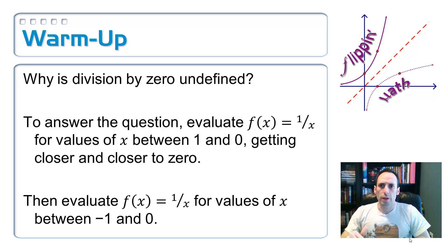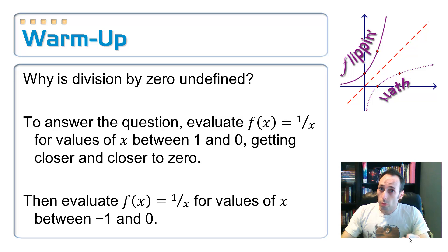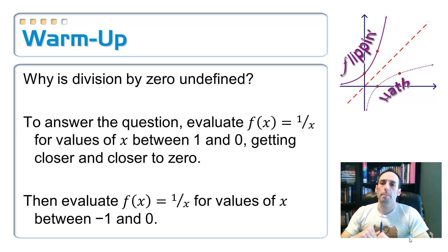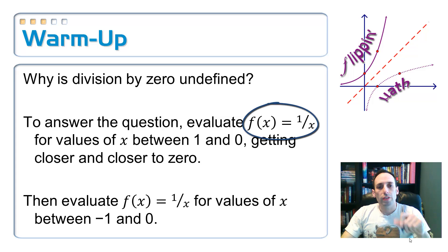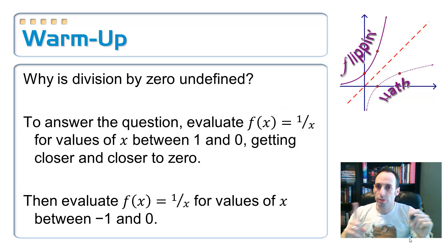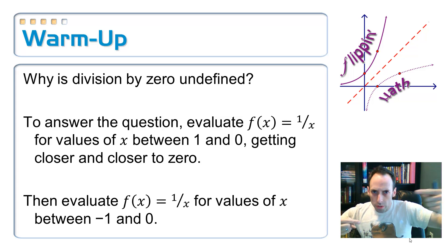Talking about dividing by zero — why is it undefined? You've been in math for quite some time and your teacher has always said you're not supposed to divide by zero. You plug it into the calculator and it says error. To answer that question, we're going to examine the function f(x) equals one over x, because if I put zero in for x, I'd be dividing by zero. So instead, we're going to get closer and closer to zero from one side and the other and see what we get close to.